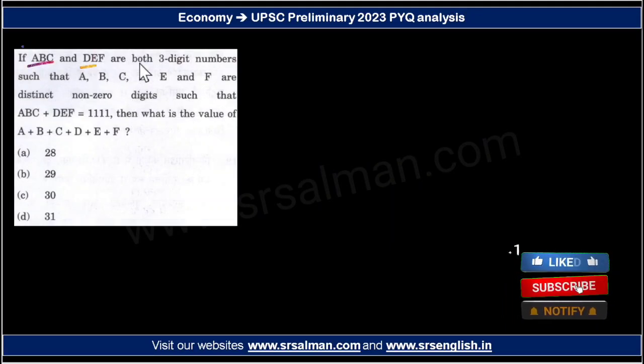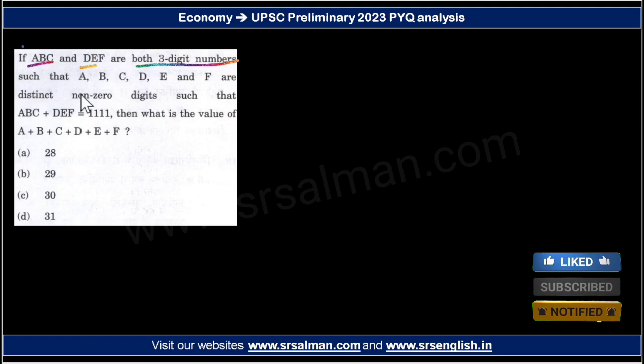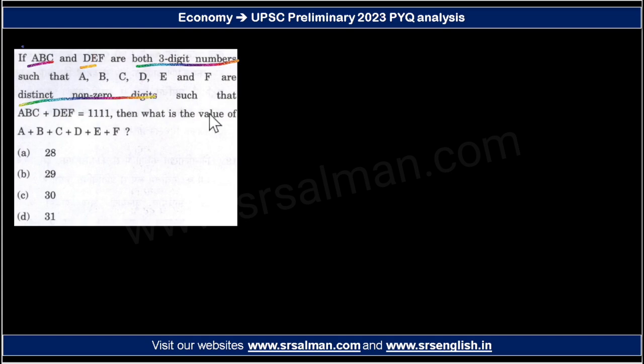If ABC and DEF are both three-digit numbers such that A, B, C, D, E, and F are distinct non-zero digits, and such that ABC plus DEF equals 1111, then what is the value of this one?